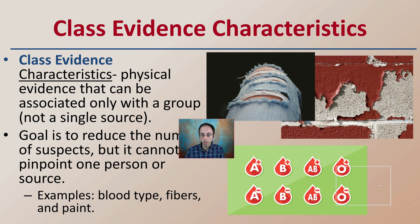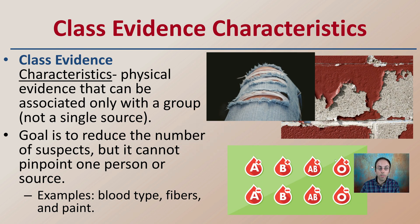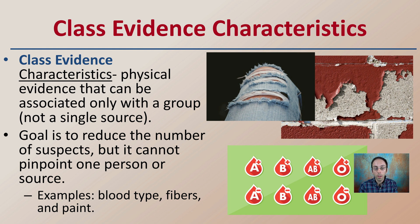Class evidence is a refinement on physical evidence. Characteristics of physical evidence that can be associated only with a group and not a single source fall under the category of class evidence. The intention is to reduce the number of suspects, but it cannot pinpoint one person or source. Examples include blood type, fibers, and paint — these are all examples of class evidence.